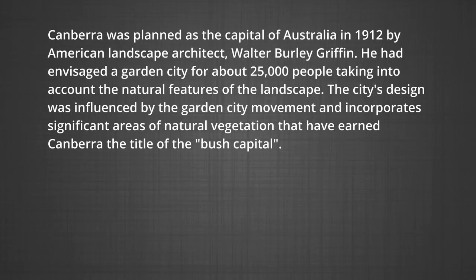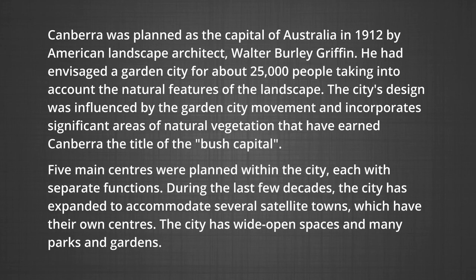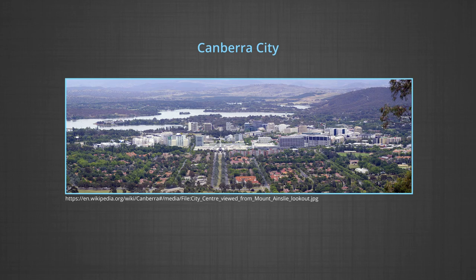Canberra was planned as the capital of Australia in 1912 by American landscape architect Walter Burley Griffin, who envisaged a garden city for about 25,000 people, taking into account the natural features of the landscape. The city's design was influenced by the garden city movement and incorporates significant areas of natural vegetation, earning Canberra the title of the 'Bush Capital.' Five main centers were planned within the city, each with separate functions. During the last few decades the city expanded to accommodate several satellite towns, and the map clearly shows separate city centers with wide open spaces, parks, and gardens.